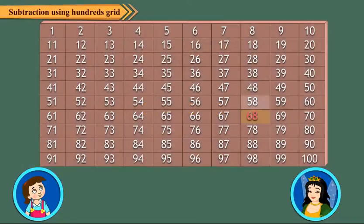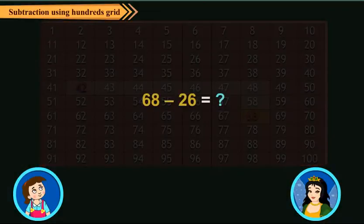So we first move 2 steps upward from 68 to reach 48. From 48, we move 6 steps towards left to reach 42.